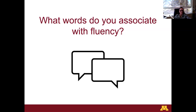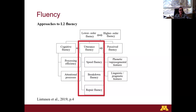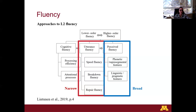So all these terms — iteration patterns, elaboration, ease of communication, negotiation of meaning, communication, accuracy — are related with fluency, and I'm sure I'll make mention of these words at some point during the presentation. Fluency has three main approaches in language acquisition: cognitive fluency, which is related to working memory and mental processes; utterance fluency, known as the narrow perspective; and perceived fluency, known as the broad perspective. I will talk more about these two last perspectives in the next slides.